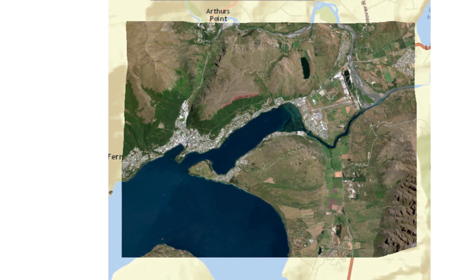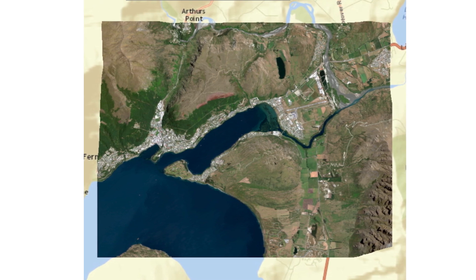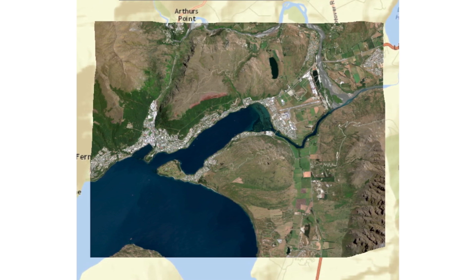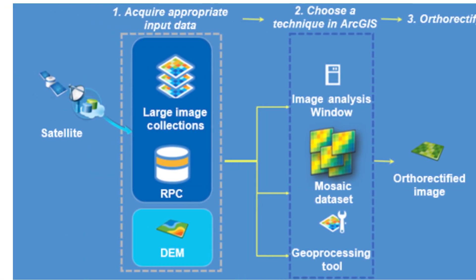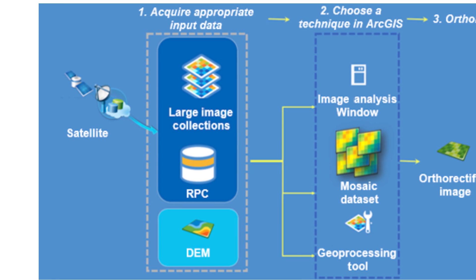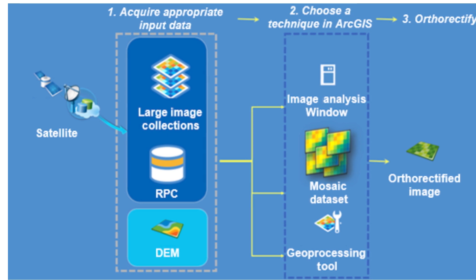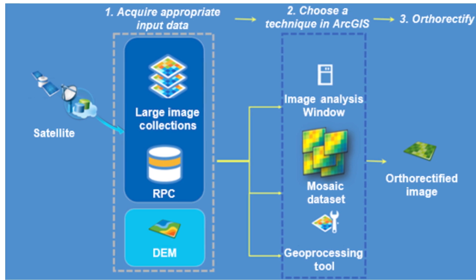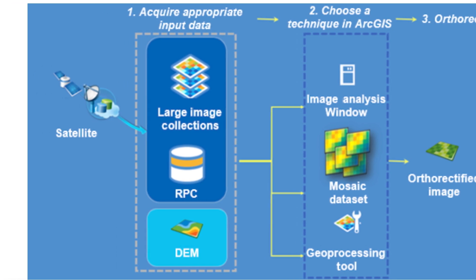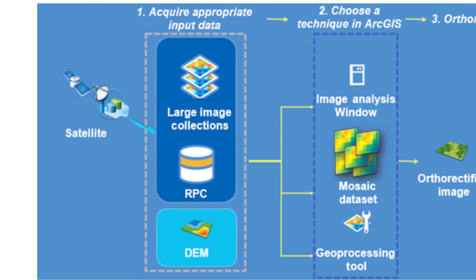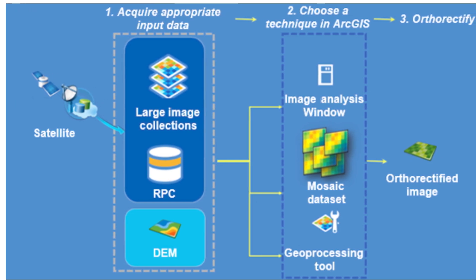Workflow for creating an orthorectified image: use the following workflow to create an orthorectified image using ArcGIS. Orthorectifying an image uses a three-step workflow. The preceding graphic presents a generalized workflow for orthorectifying a satellite image. Input the original image and the RPC-DEM information, then choose one of three methods in ArcGIS depending on the data and desired output.